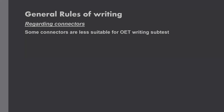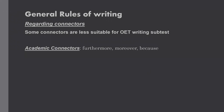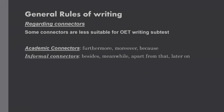There are some types of connectors. The first one is academic connectors — furthermore, moreover, because — these are academic connectors which we will not use in our OET writing. The second one is informal connectors. We are using a formal register here, so there is no need to use informal connectors such as besides, meanwhile, apart from that, later on. And there are also outdated connectors.